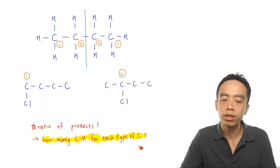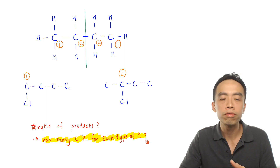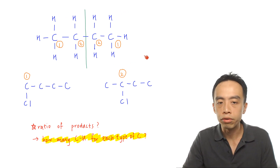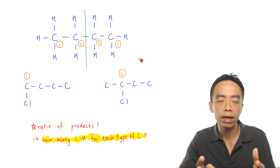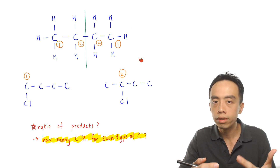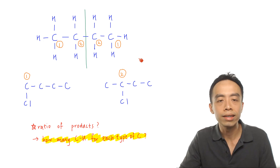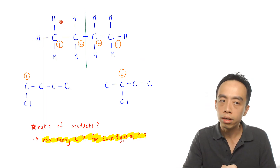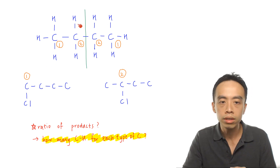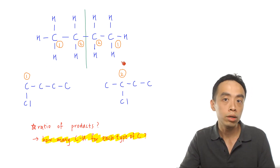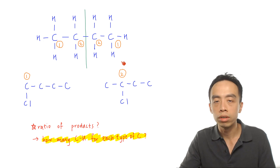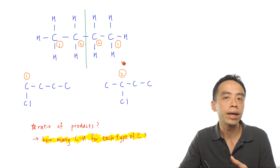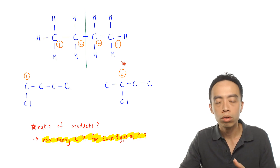Now that we know two different products can be formed, can we predict their ratio? The expected ratio of 1-chlorobutane to 2-chlorobutane depends on the number of C–H bonds for each type of carbon. The assumption is that for butane, all 10 hydrogens have equal probability of being substituted — the chances of free radical substitution occurring at each hydrogen are exactly the same. Based on this simple assumption, we can deduce the expected ratio purely from probability.